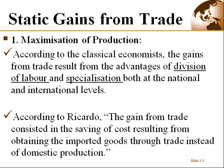So what are the static gains from trade? The first one is maximization of production. According to classical economics, gains from trade result from two key things: division of labor and specialization. When there is division of labor, people focus more on producing a particular thing and by doing so they produce more. With specialization, they master better ways of producing it.